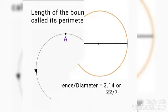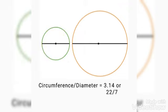Let's take two circles of different radii. Find the ratio of the circumference to the diameter of both circles. You will find that the ratio of the circumference to the diameter of both circles is the same.